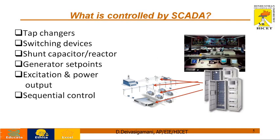This is a SCADA room, also called a control room. SCADA can control the following devices like switching devices and tap changers. We can control the status of information like on-off information, discrete IOs, and analog IOs — everything is completely controlled by SCADA. Switching devices like IGBT and SCR have been controlled by SCADA. Shunt capacitors, reactors, generator set points, excitation and power output, as well as sequential control — where sequential control is nothing but PLCs — are all managed. PLCs are an integral part of SCADA where all tasks are carried out with the help of PLCs.